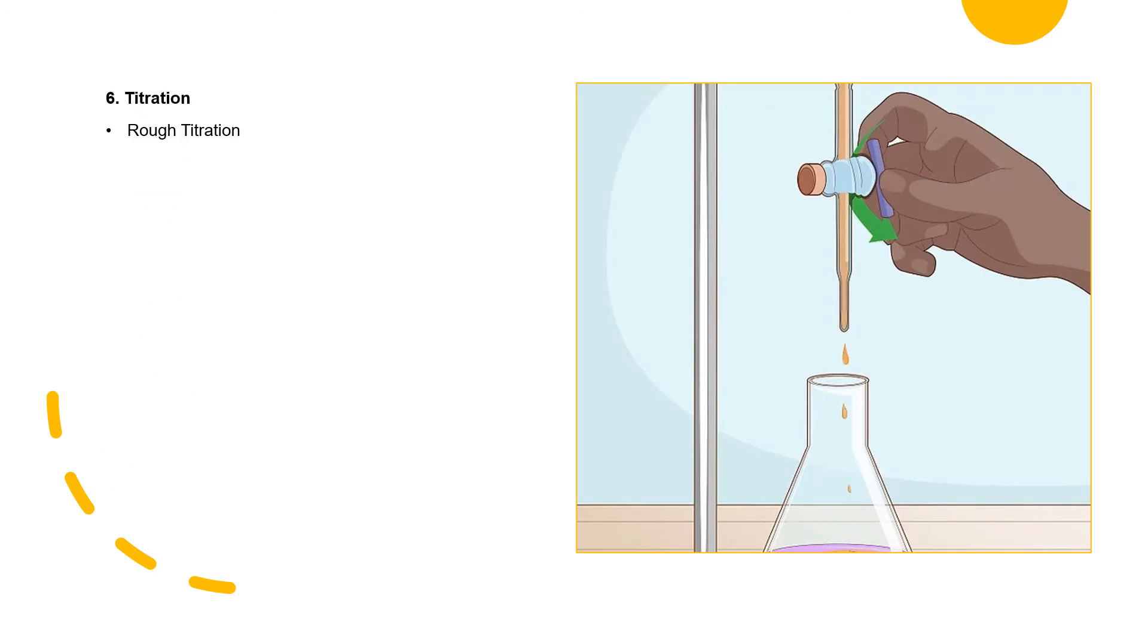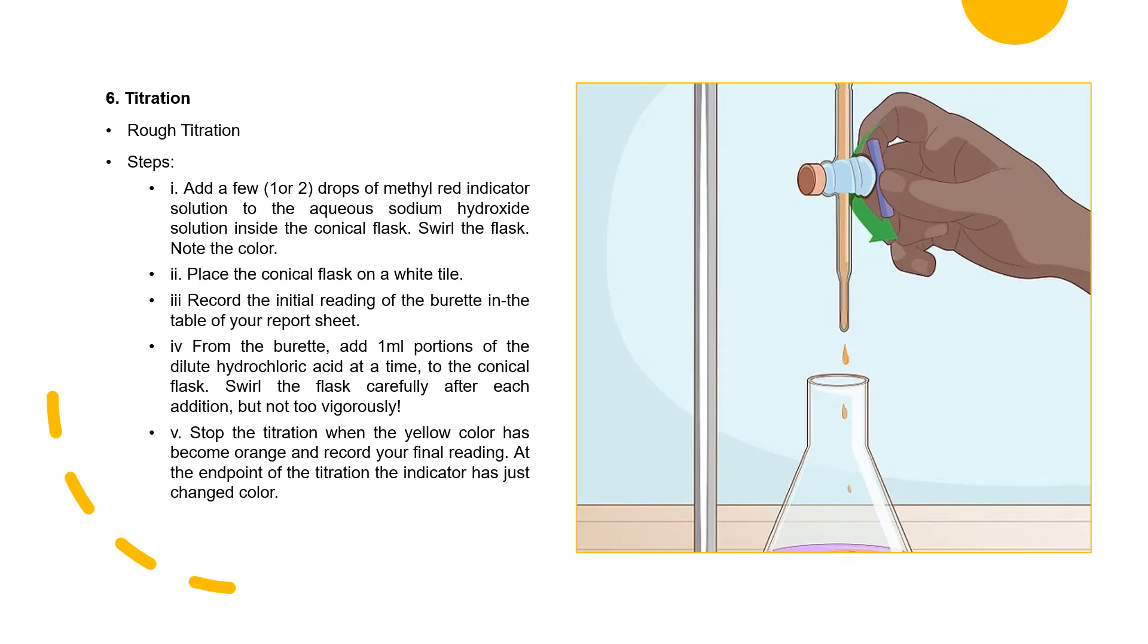Next step is where the titration begins. Rough titration. Add a few drops of methyl red indicator solution or phenolphthalein solution to the aqueous sodium hydroxide solution inside the conical flask and then you must swirl the flask. Place the conical flask on a white tile. Record initial reading of the burette in the table of your report sheet. From the burette, add 1 ml portions of dilute hydrochloric acid at a time to the conical flask. Swirl the flask carefully after each addition but not too vigorously. Stop titration when yellow color has become orange or white color has become pink and record your final reading. At the end point of titration, the indicator must change the color.